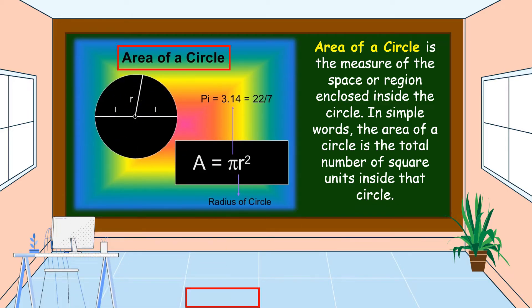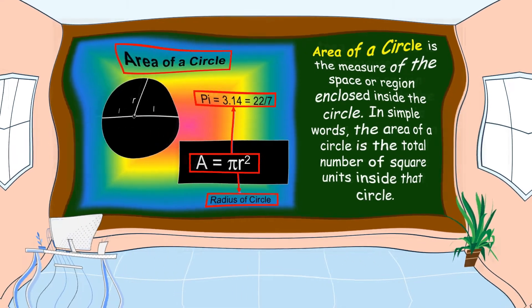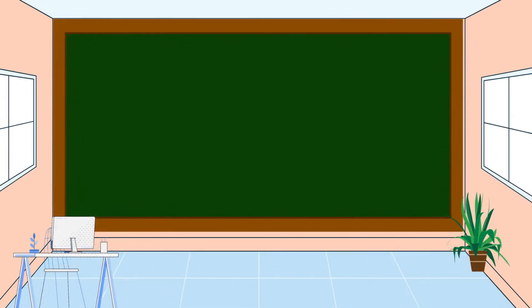To find the area of a circle, we're going to use this formula: Area is equal to pi times radius squared. The value of pi is 3.14 or 22 over 7, where r is the radius of the circle.